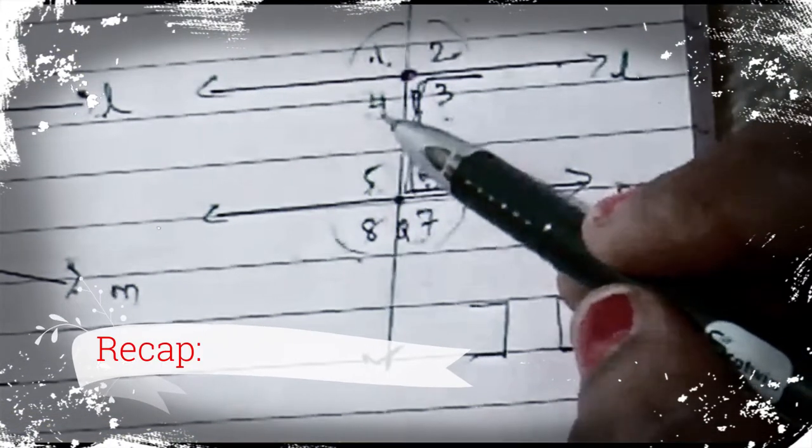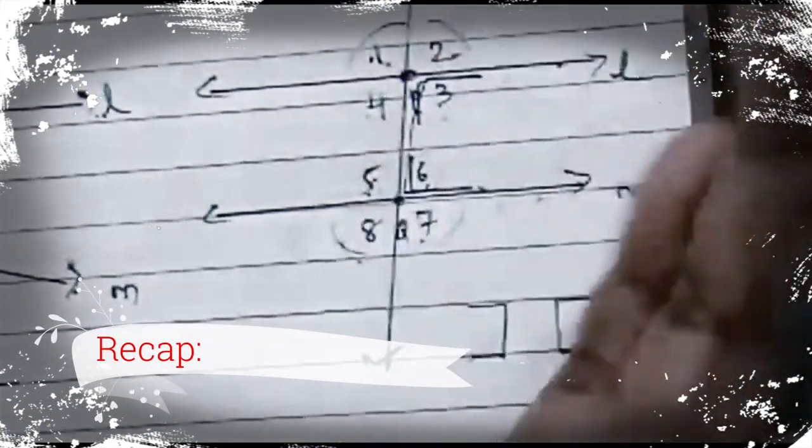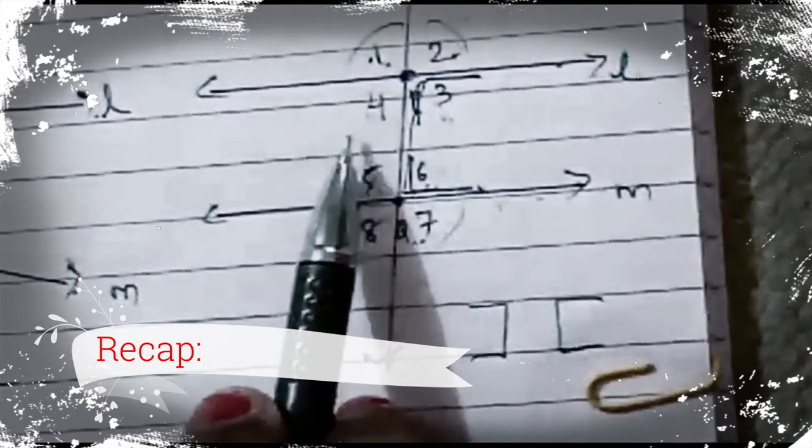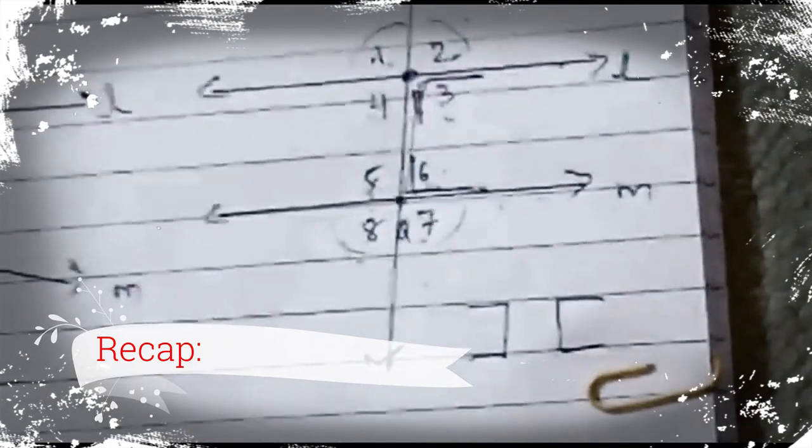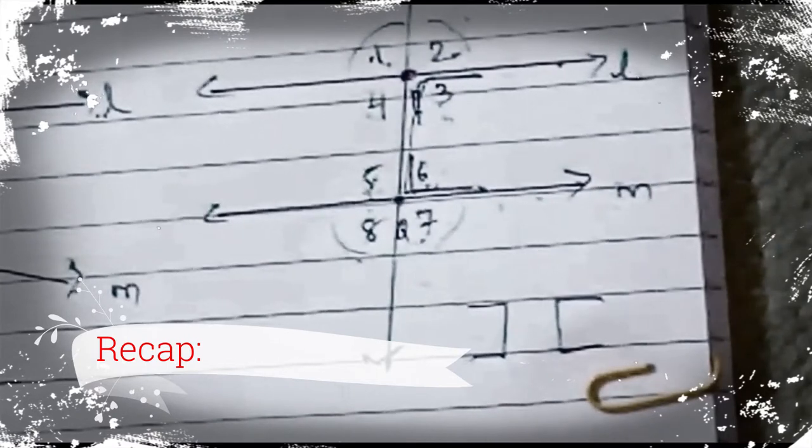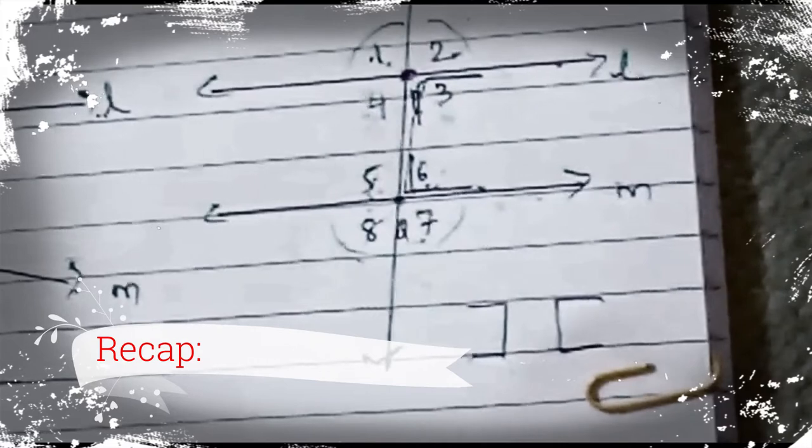There you have angle 4 and angle 5 on the left side. These are also called interior pair of angles. In our next slide we will be learning about properties, axioms, and theorems.